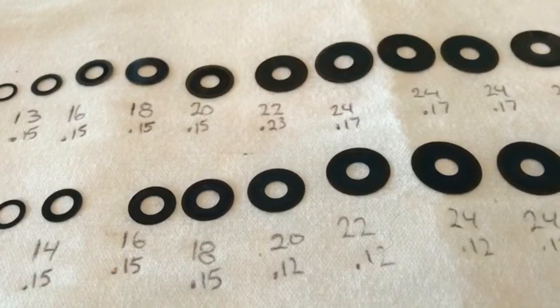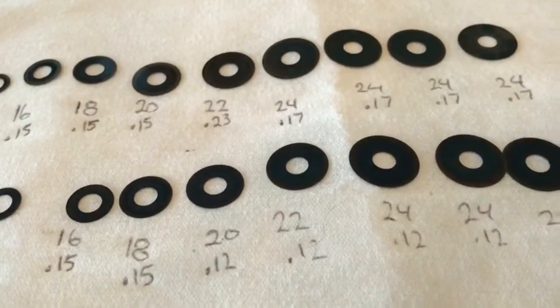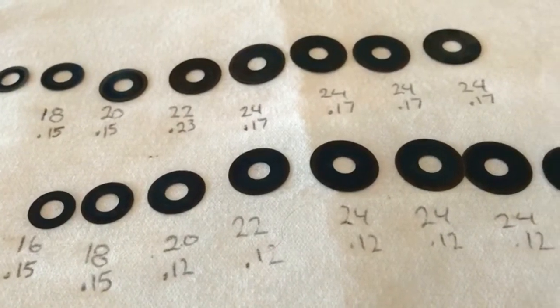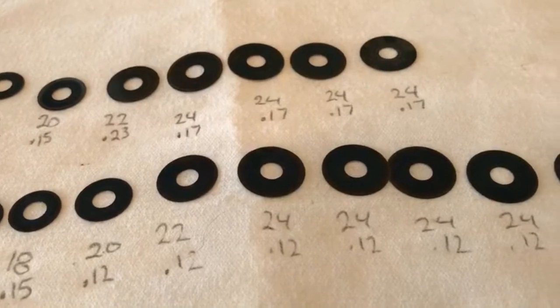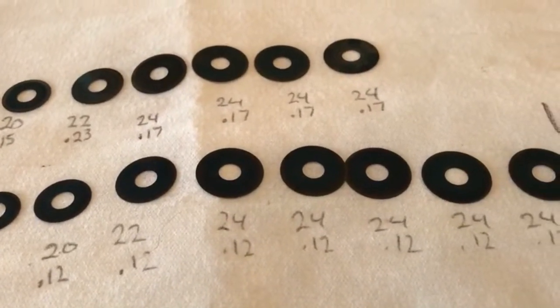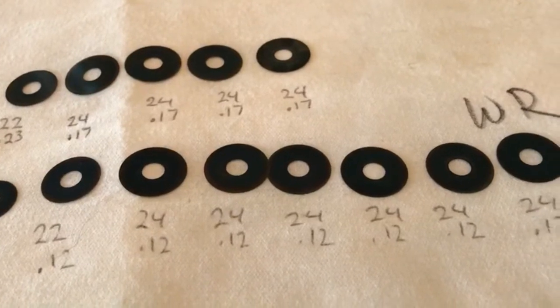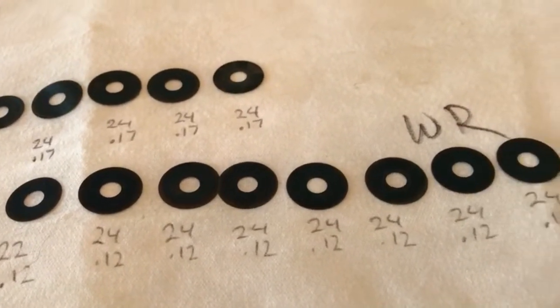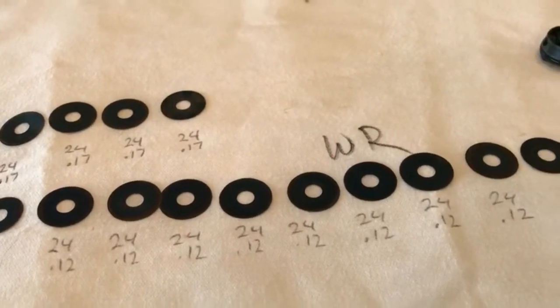But when we get to the 24's, the YZ's are thicker and the WR has more of them. So that is why the WR has a plusher ride and is more absorbent on the small bumps, yet does not take the big hits nearly as well.